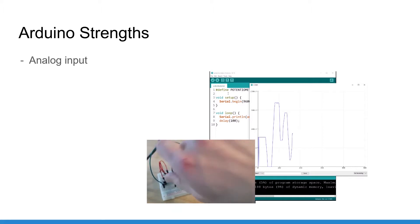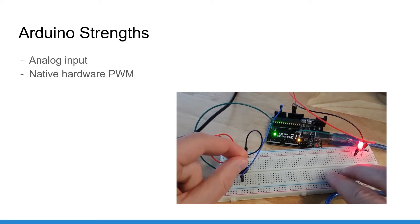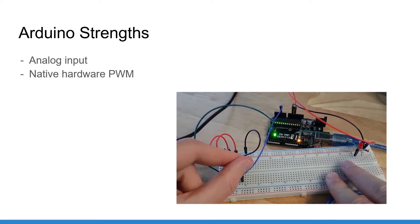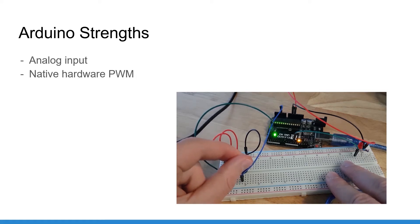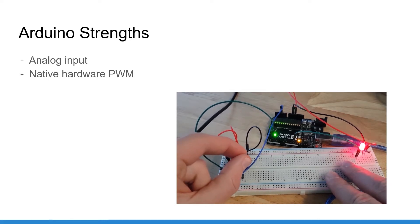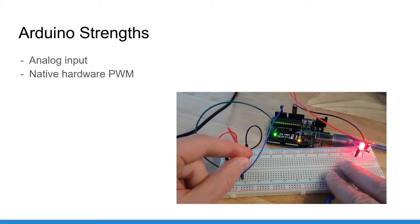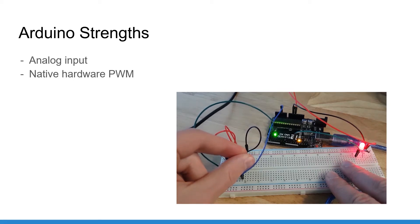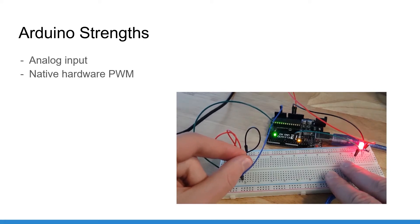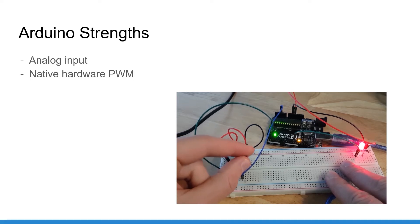Some of the pins have a PWM functionality, which very basically allows you to send a custom voltage to a component instead of just 0 and 5 volts. On Arduino, PWM is native and is handled by the hardware, which means it's not going to take away any software resources. On the Raspberry Pi you could use PWM, but this is a software PWM, meaning it takes resources from your CPU and may not be as stable as on the Arduino.